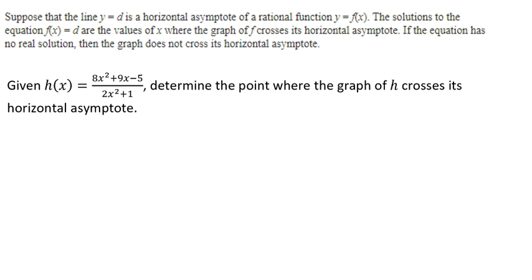In this video, we're going to learn how to determine where a graph crosses a horizontal asymptote. Now suppose that a line y equals d is a horizontal asymptote of a rational function y equals f of x.